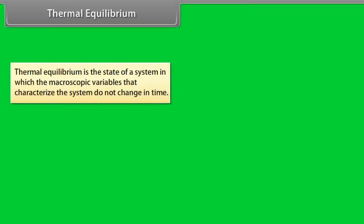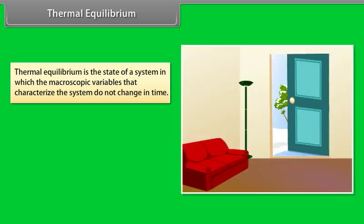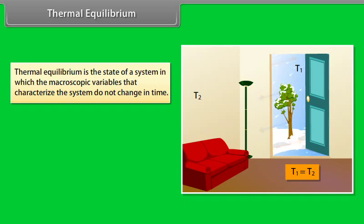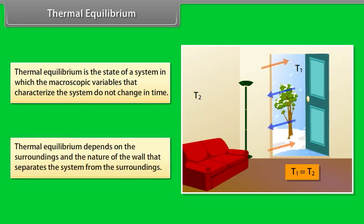Thermal equilibrium is the state of a system in which the macroscopic variables that characterize the system do not change in time. For example, in winter season, when you open the door of your house, heat moves out. To balance the temperature, after a few minutes the temperature inside and outside is the same. This is due to thermal equilibrium. Thermal equilibrium depends on the surroundings and the nature of the wall separating the system from the surroundings.